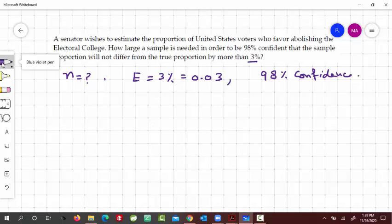Because we have not given previous estimates, we would use this equation to determine the sample size as 0.25 times Z sub alpha by 2 divided by E squared. So first we have to find Z sub alpha by 2.